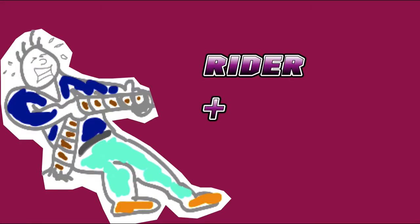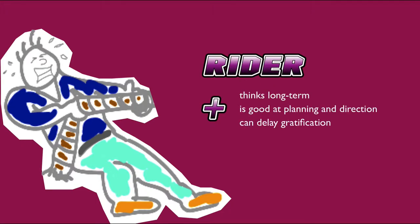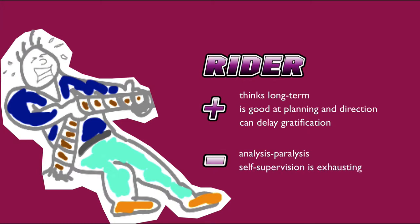On the positive side, the rider — your rationality — thinks long term. It is good at planning and direction, and it can delay gratification. On the negative side, the rider can over-analyze the situation, also called analysis paralysis, and it finds that self-supervision and self-control, or constantly using your willpower, can be exhausting.